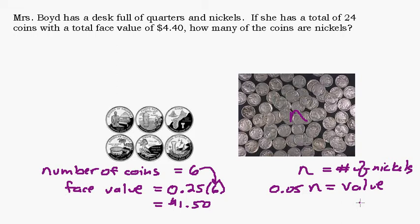Let's go up here and take a look at our problem again. She has a total of 24 coins with a total face value of $4.40. How many of the coins are nickels? So we need to define some variables. If you're ever not sure what your variable should be, look what they're asking for. They're asking for how many nickels. Let n equal the number of nickels. How many of those coins are in our drawer?